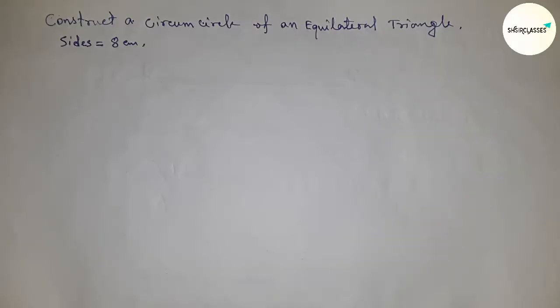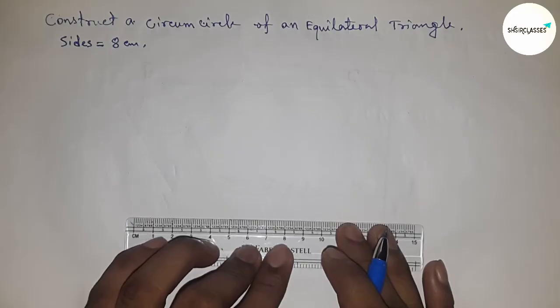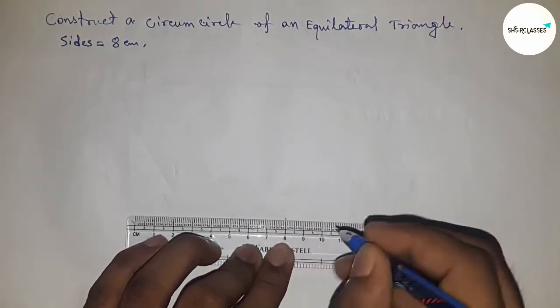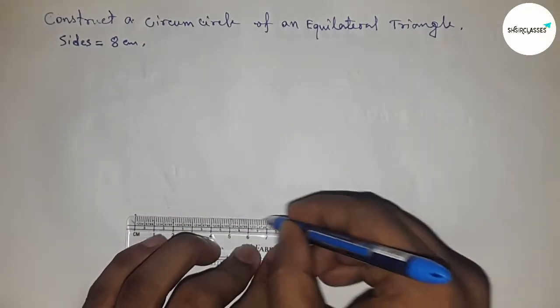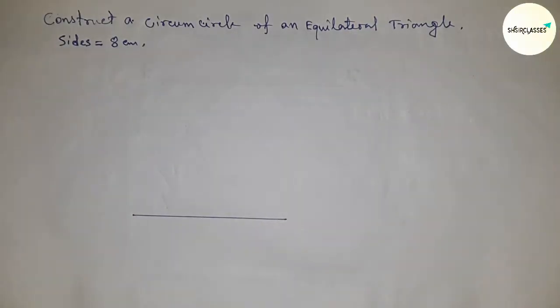Hi everyone, welcome to SSD Classes. Today we're talking about the construction of a circumcircle of an equilateral triangle with each side 8 centimeters. Let's start by first constructing the equilateral triangle. First, drawing a line of 8 centimeters.